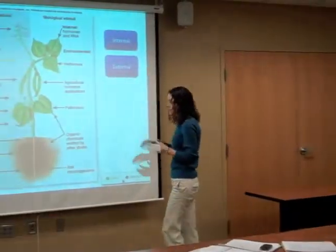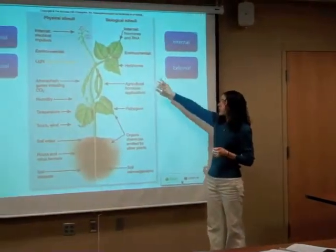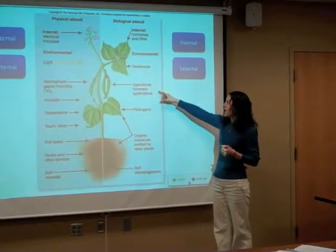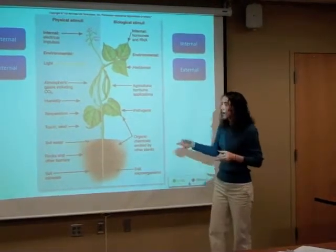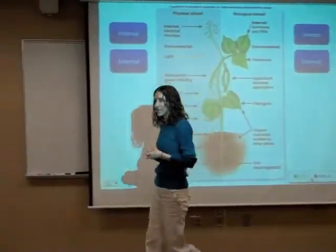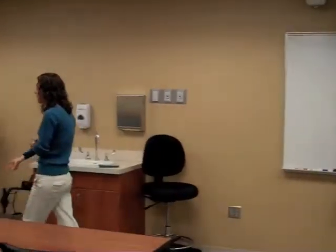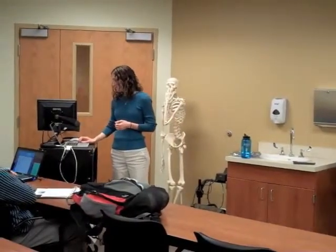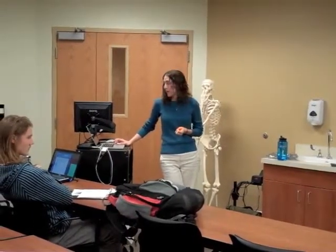You got herbivores or predators, and you also mentioned pathogens and chemicals, agricultural pesticides as well that could be part of what the plant is responding to. So the plant sensory response is very similar, in fact, to the animal sensory response.